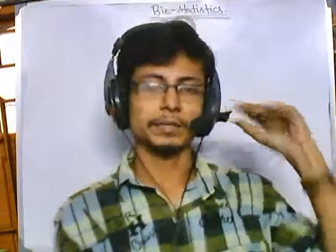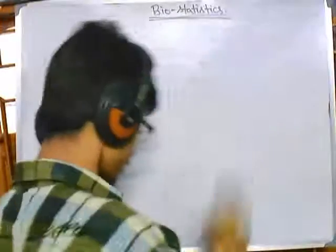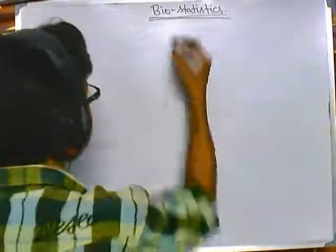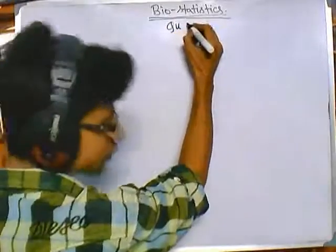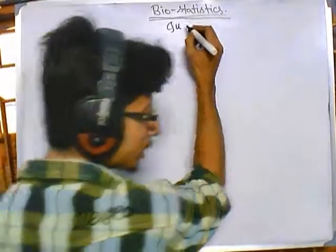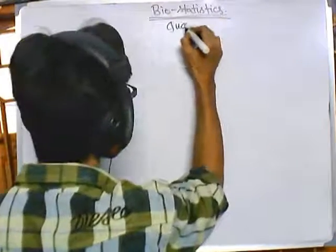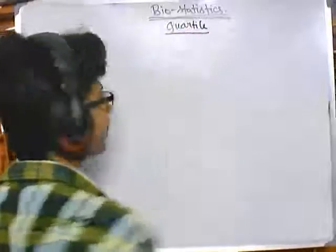Welcome friends. We have seen how to calculate the mean, median, mode, and also the dispersion and deviations — mean absolute deviation, median absolute deviation, mean average deviation, and standard deviation. Now in this video we will be looking at a different concept of statistics which is called the quartile concept.